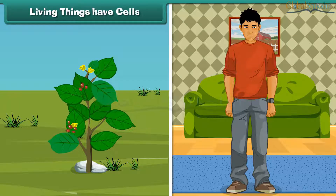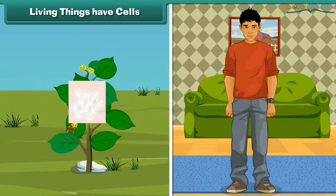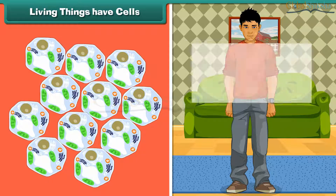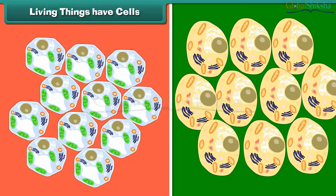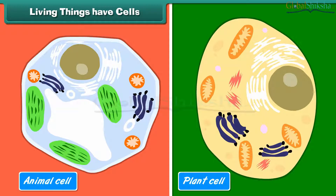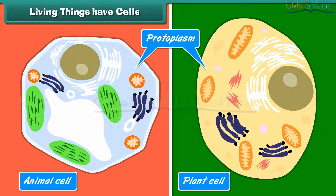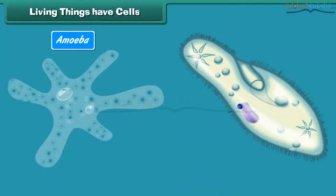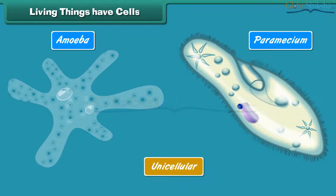Living things have cells. Each living being has a distinct individuality; it cannot be broken into two or more independent parts. The body of a living being is made of one or more cells. Cells are considered to be the structural and functional unit of life. The cells are made of protoplasm, or living matter. All the body functions and properties of life are due to protoplasm. Some living organisms like amoeba and paramecium are made up of one cell only; they are called unicellular.